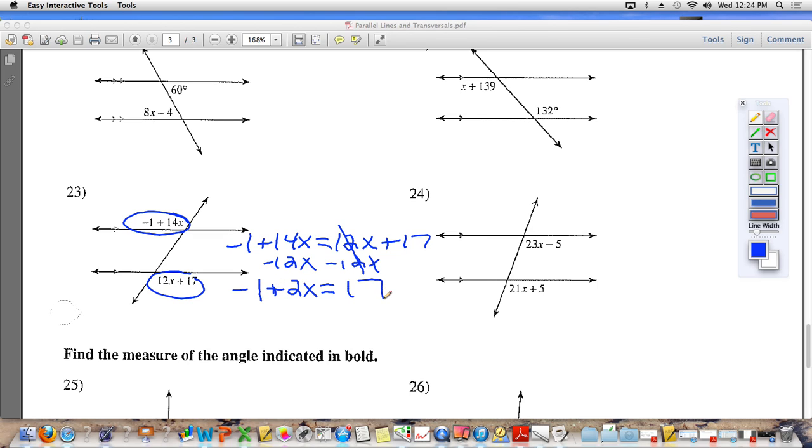2x is equal to what's left over there on the right side of the equal sign? 17. Keep going. What do you do to get x alone now? Add 1. Negative 1, add 1 to the left, add 1 to the right. So 2x is equal to 17 plus 1, which is 18. And then of course you have to divide each side by 2, and x is equal to 9.